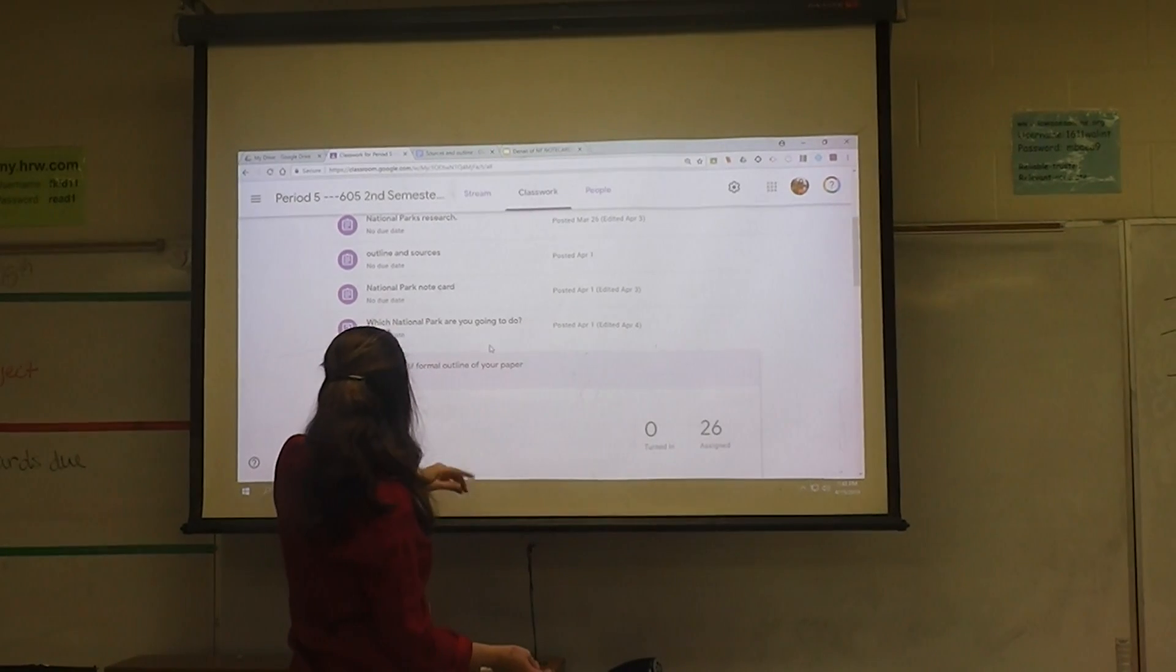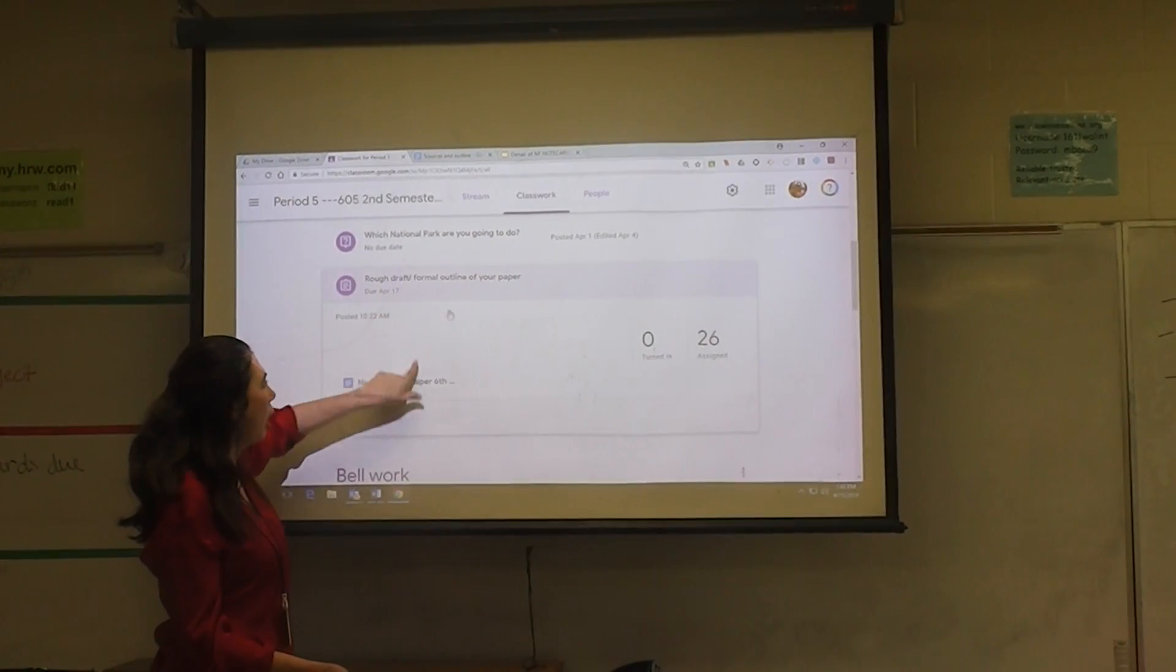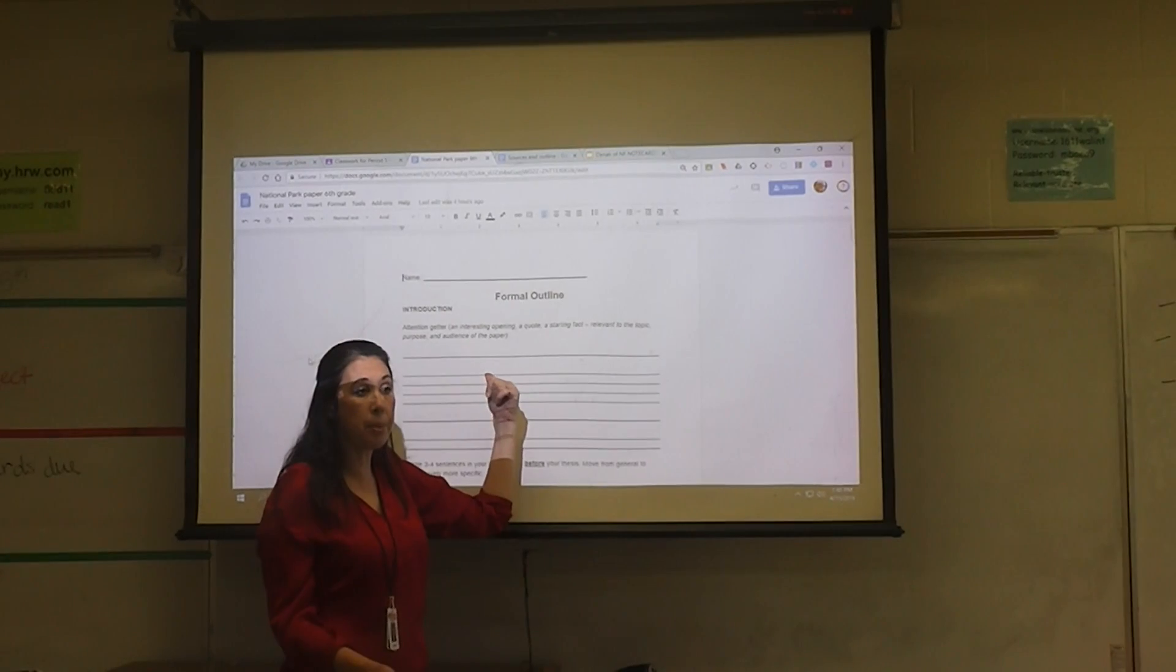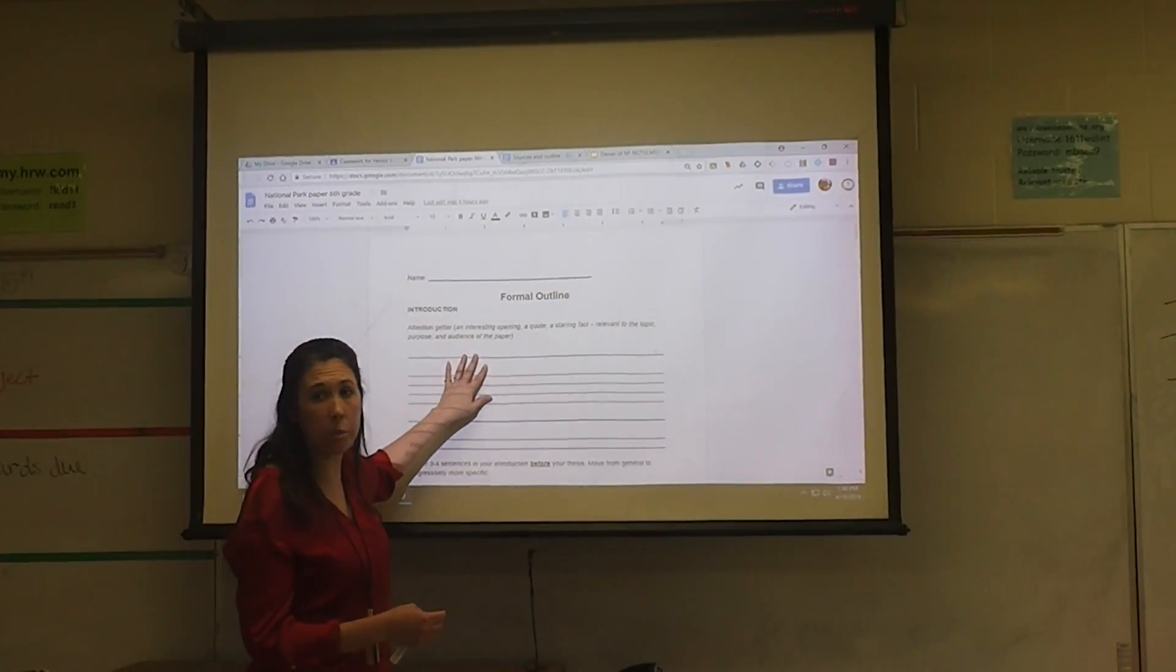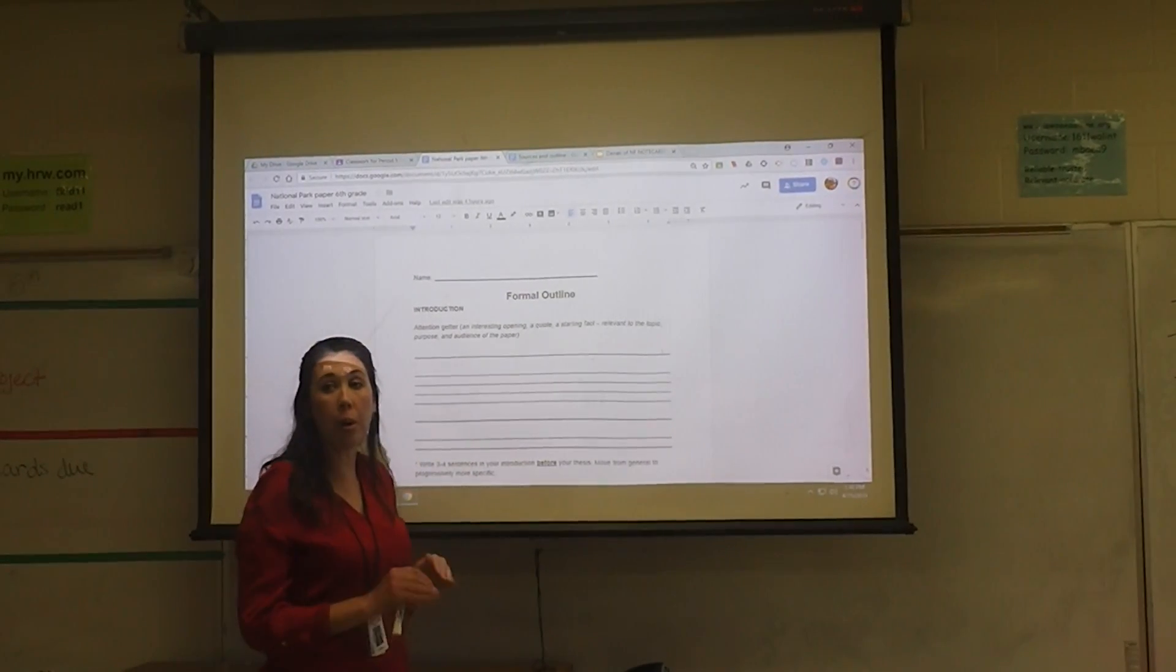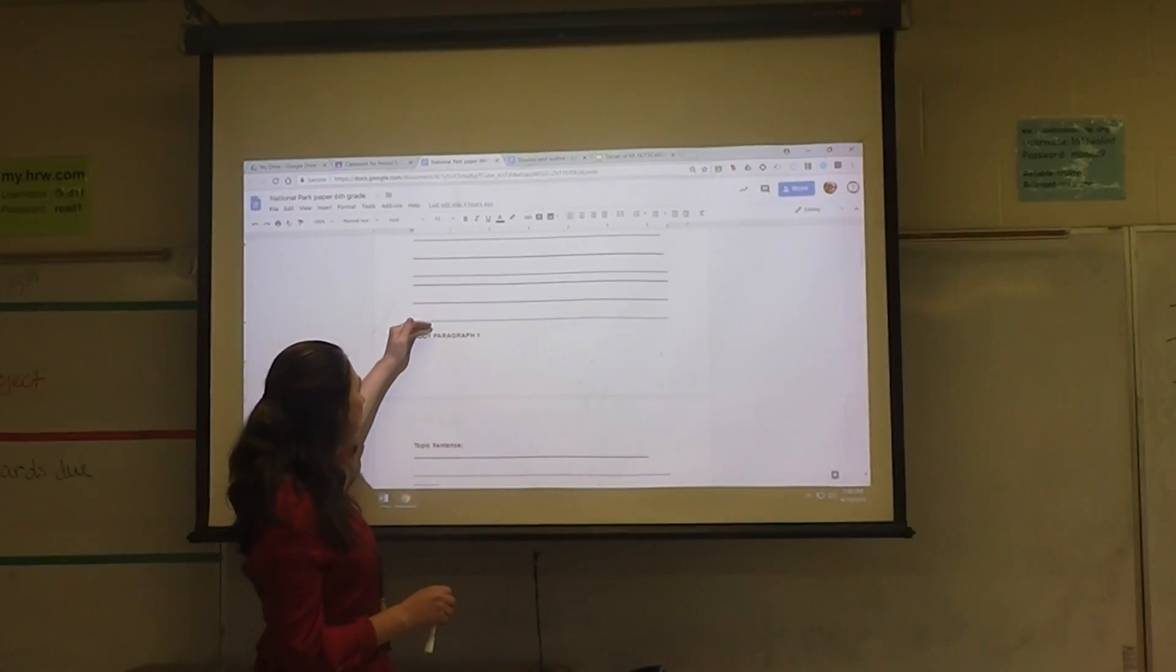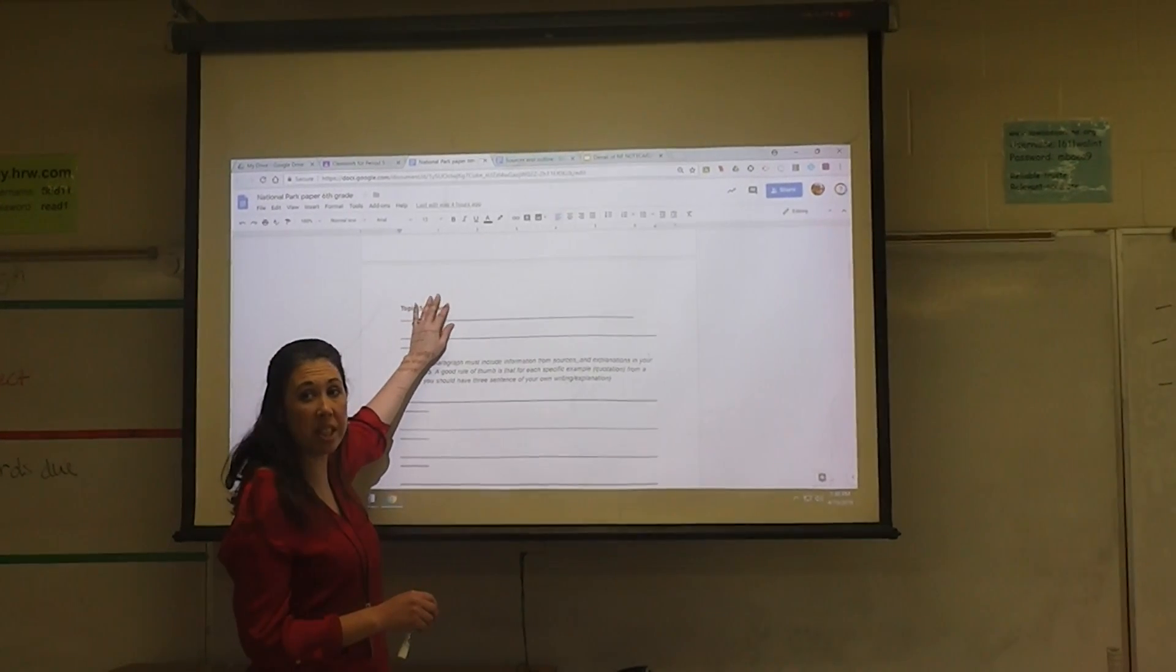When you're finished with organizing your note cards, then you can go to classwork for period five or whatever class period you have, and you can come down here to the formal draft or formal outline of your paper and you can click on that. Now you can start typing and writing a rough draft on this. We are going to skip the introduction, we're not going to talk about that yet, and we're going to skip the thesis. We will go into more depth later on, but we're going to focus - go ahead and go down Carter - we're going to focus on paragraph one with our topic sentence.